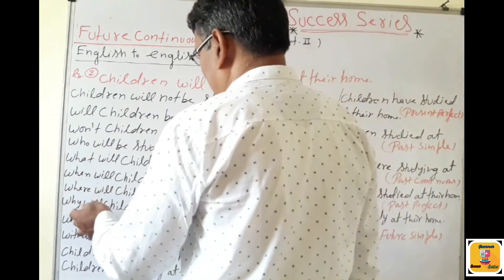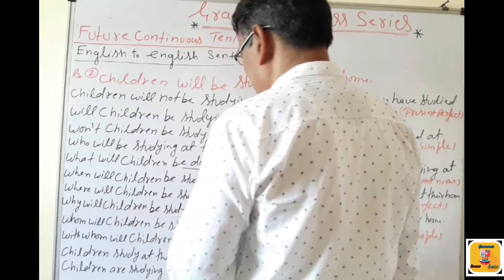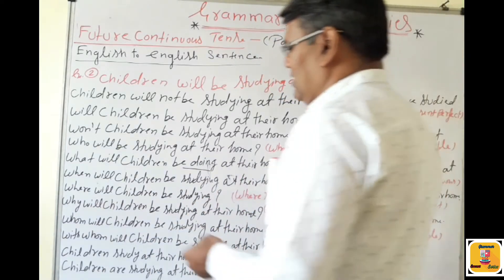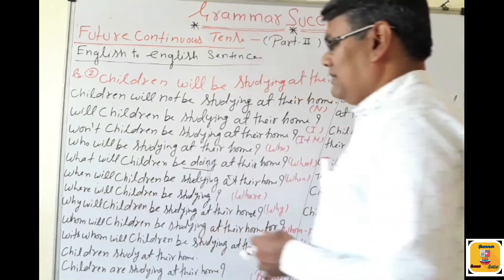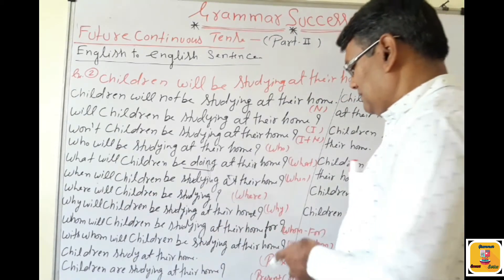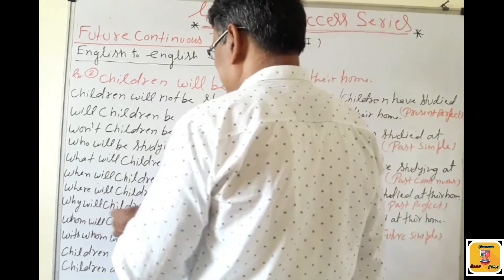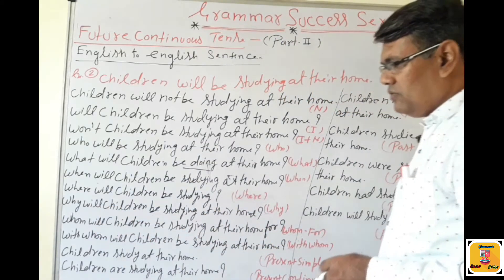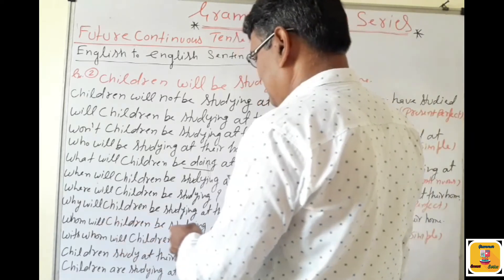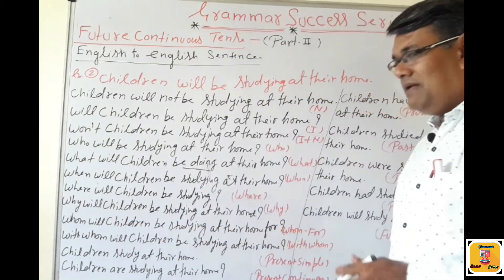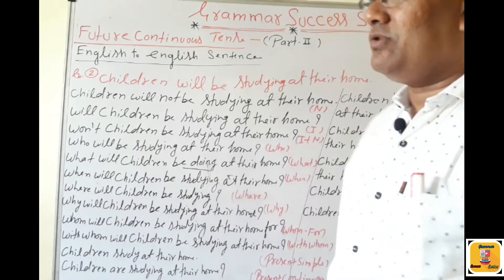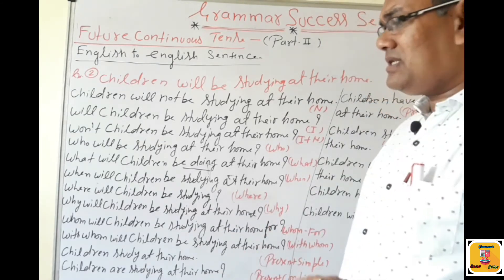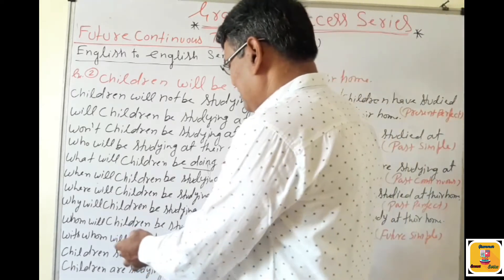Use of 'Where' — place. Remove 'at their home.' 'Where will children be studying?' Next, 'for' — bachchey kiske liye padhai kar rahe honge — for the exam. 'For what will children be studying at their home?' Use of 'With Whom': 'With whom will children be studying at their home?'